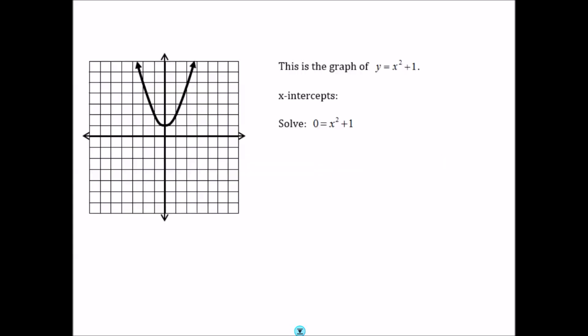Let's take a look at this graph first. This is the graph of y equals x squared plus 1. If I asked you to find the x-intercepts of this graph, you would tell me that there are none, because it does not cross the x-axis.